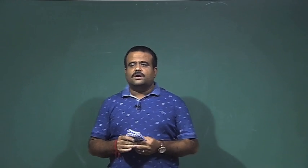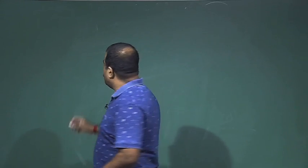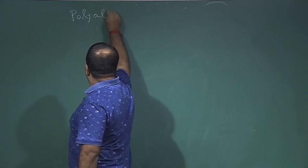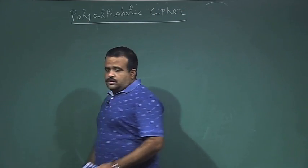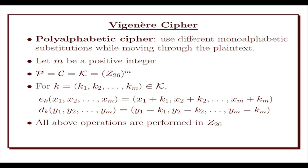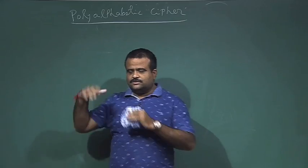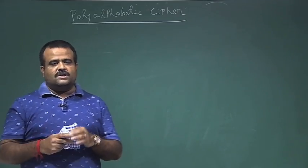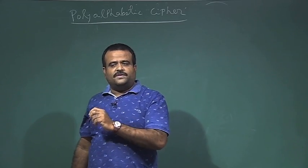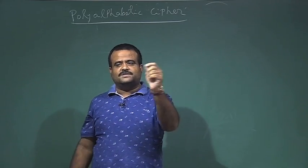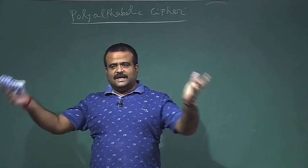To prevent frequency analysis, we will talk about what is called a poly-alphabetic cipher. In a poly-alphabetic cipher, the idea is to use different mono-alphabetic substitutions while moving through the plaintext. This way, 'e' is not always mapping to a fixed alphabet — in different positions 'e' may map to 'm' or 'n' or something else.